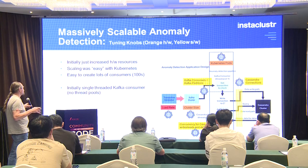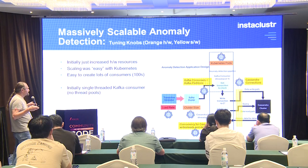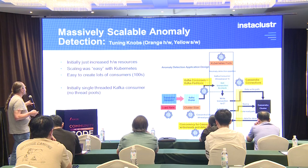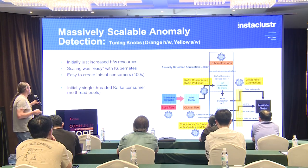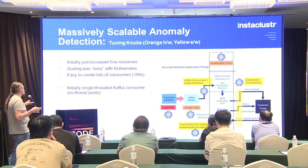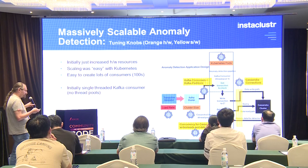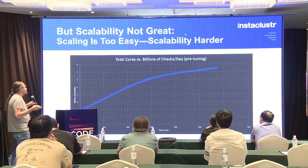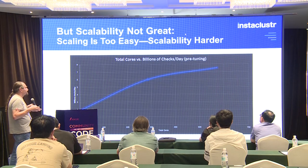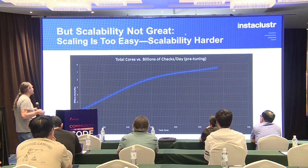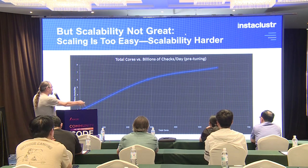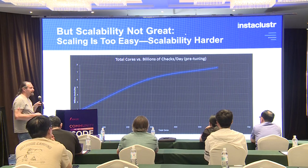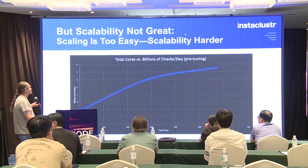Initially I did something simple and just increased the hardware resources — easy to do with Kafka and Cassandra by adding more nodes, and with Kubernetes by adding more resources. I could create hundreds of consumers very quickly. I started with a simple single-threaded Kafka consumer design with no thread pools. But the scalability wasn't particularly good. As I increased the number of cores in the total system to close to 600, scalability only went from 2 billion anomaly checks a day up to about 7.5 billion — not a particularly linear scale.